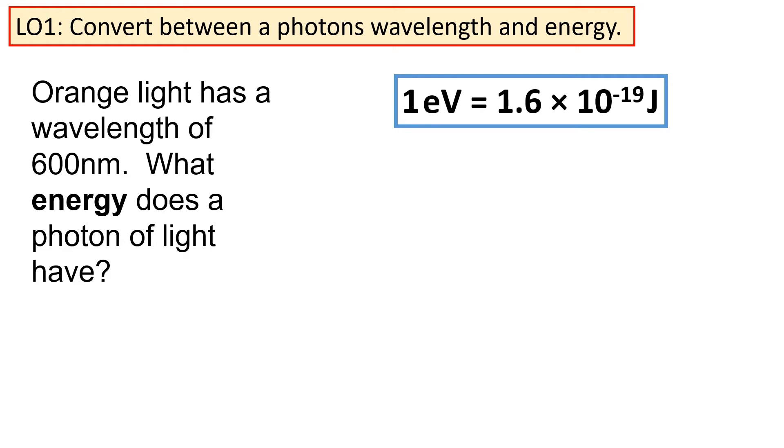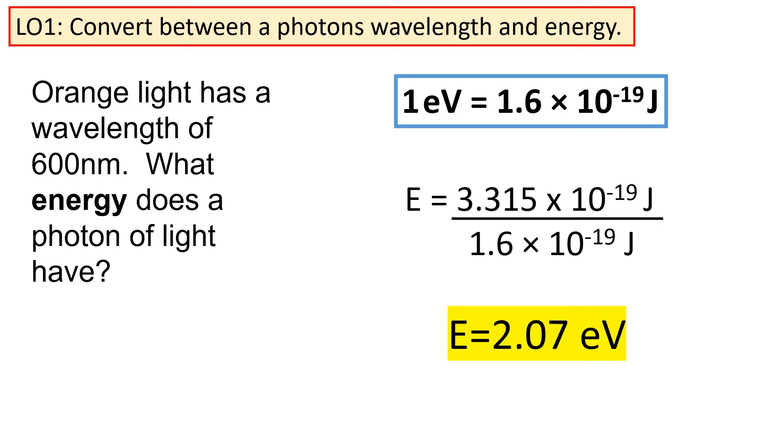So, let's convert the energy from joules into electron volts. Since one electron volt is equal to 1.6 times 10 to the minus 19, we need to divide our energy through by this number. If we do that, we get that the energy of a single photon is equal to 2.07 electron volts.